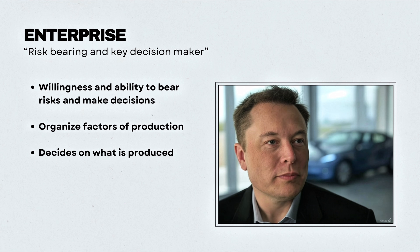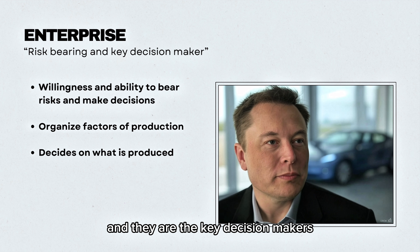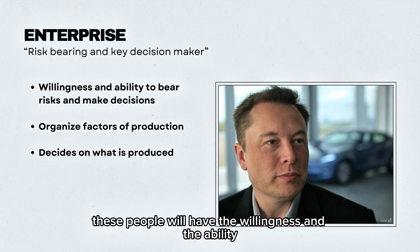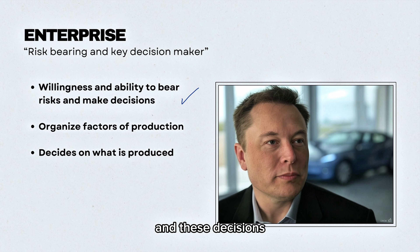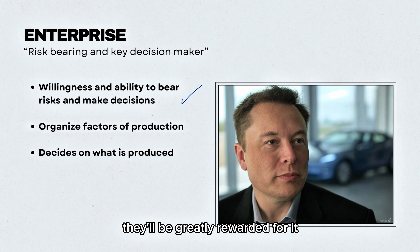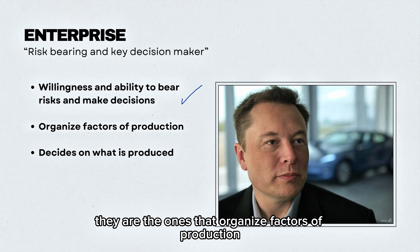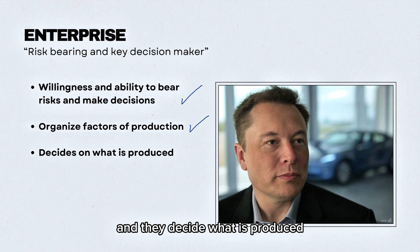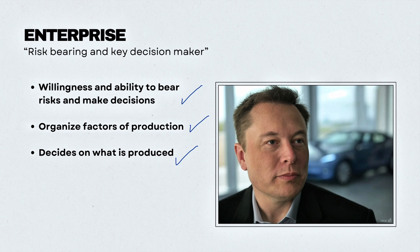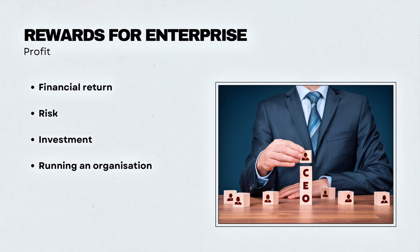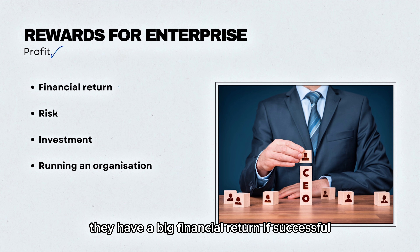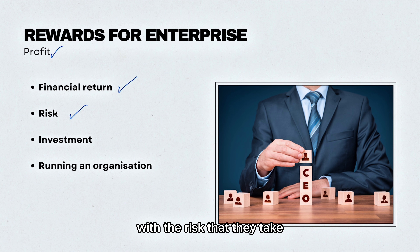The next factor of production is enterprise. This is the CEO or leader of the company — they are risk-bearing and key decision makers who have the willingness and ability to make these risks and decisions. If done successfully, they will be greatly rewarded. They organize the factors of production and decide what is produced, how it is produced, and for whom. The reward for enterprise is simply profit — a big financial return for the risk they take.